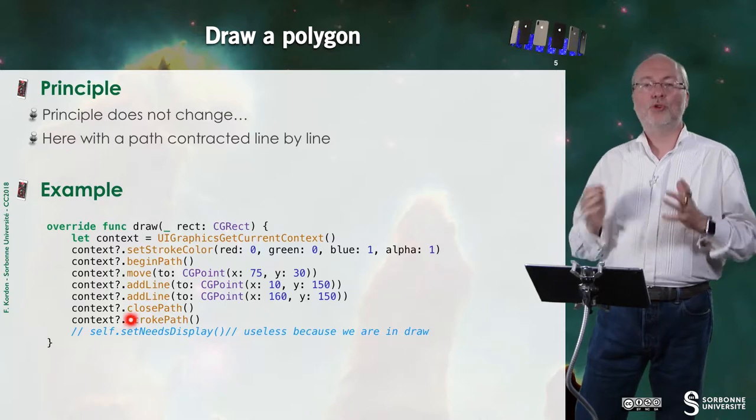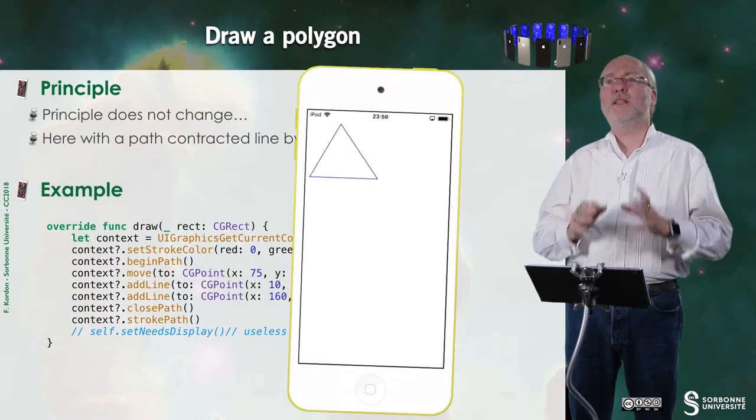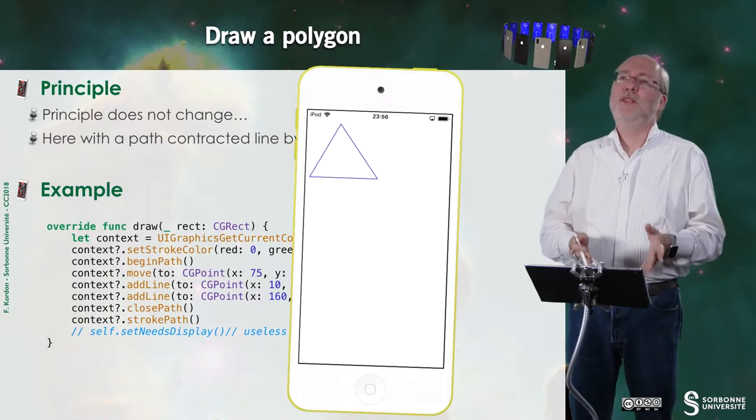And then I do stroke path. So I request my path to be drawn. And it looks like this. Once again, it's ugly, but this is the example.